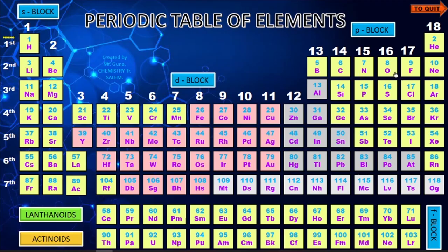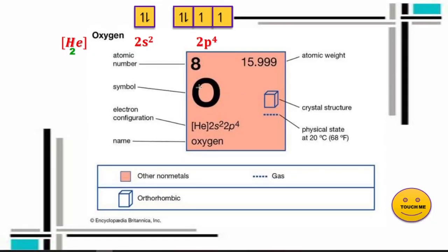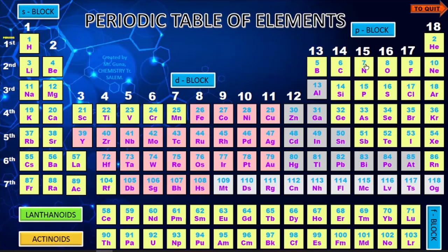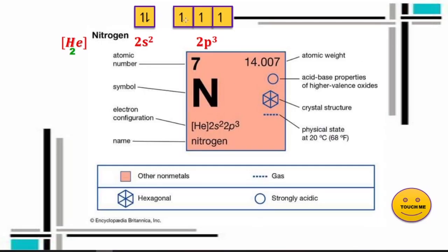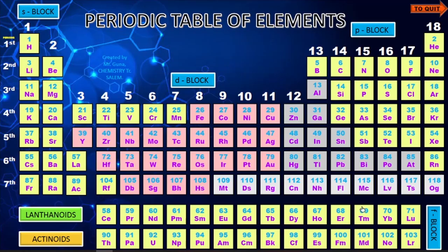For oxygen, you can check the electron arrangement according to Hund's rule. For nitrogen, the very stable half-filled electronic configuration is explained. All these elements can be checked according to your interest, with detailed information provided for each one.